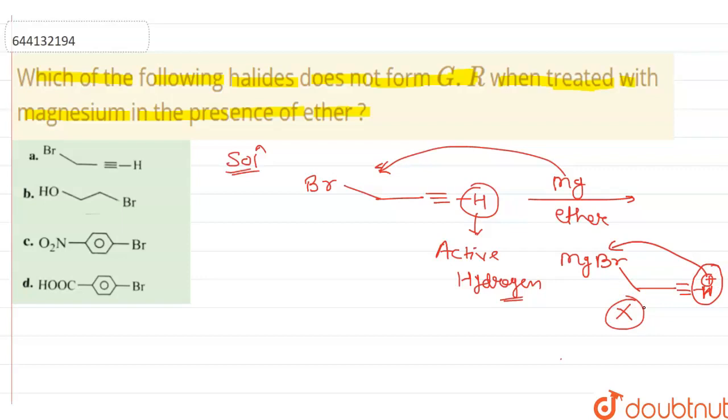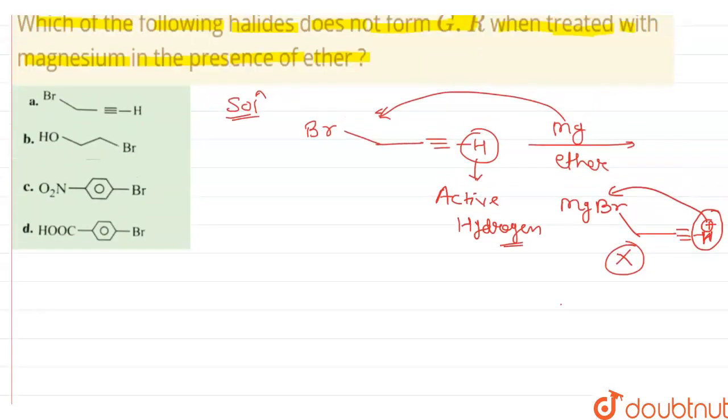So option A is correct here. And similarly we can say that in option B, here also hydroxy group has active hydrogen, H+, so here also we do not get the product as a Grignard reagent.